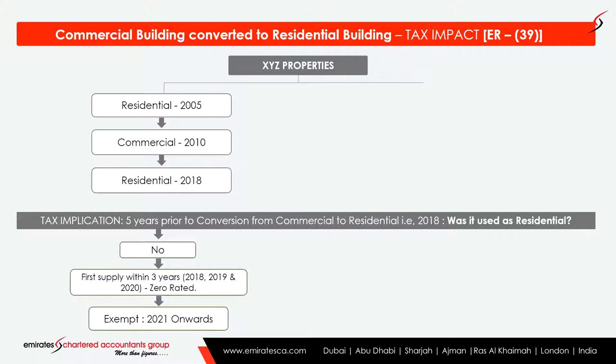In the first example: XYZ property was residential in 2005, converted to commercial in 2010, then converted back to residential in 2018. The question is: after converting to residential in 2018, how will tax apply? We check whether this property was a residential property in any of the 5 years prior to the 2018 conversion. Looking back from 2018, the answer is no — it was commercial. So in 2018, 2019, and 2020 it will be zero rated, and from 2021 onwards it will be exempted.